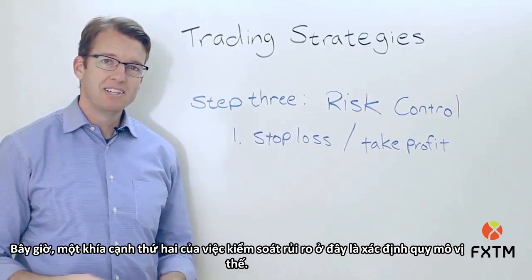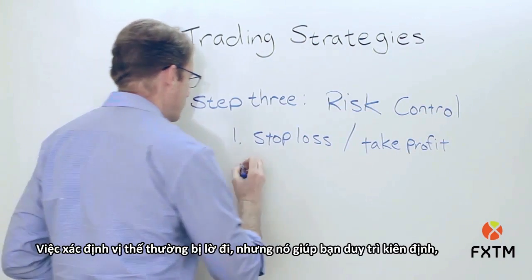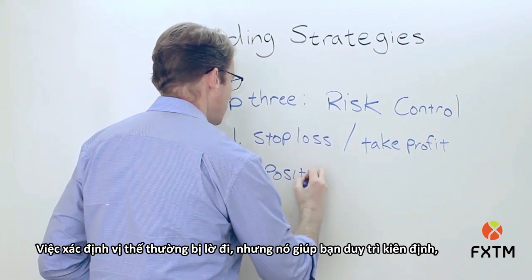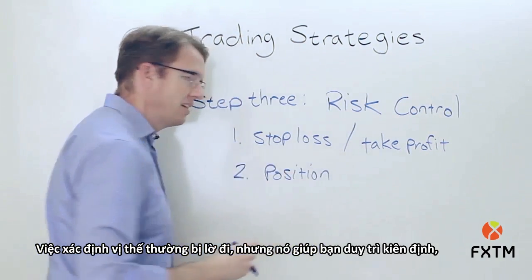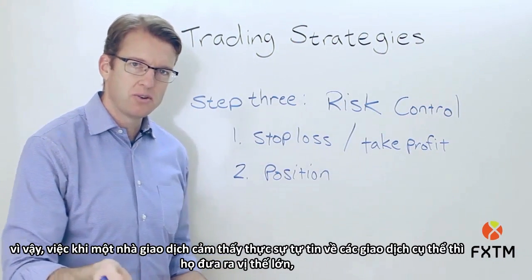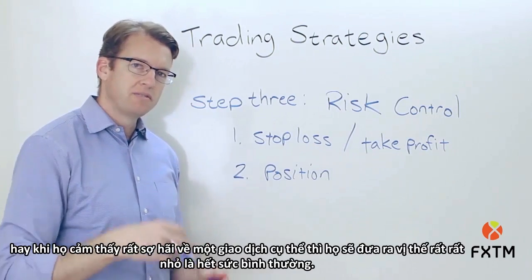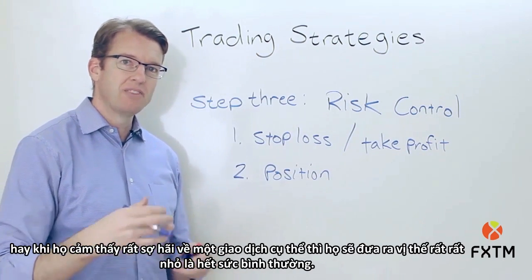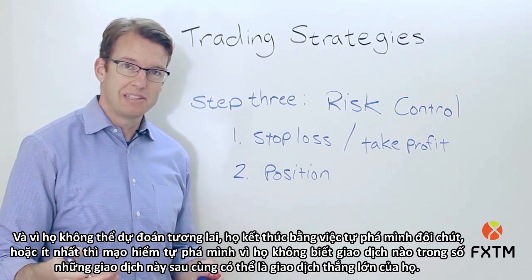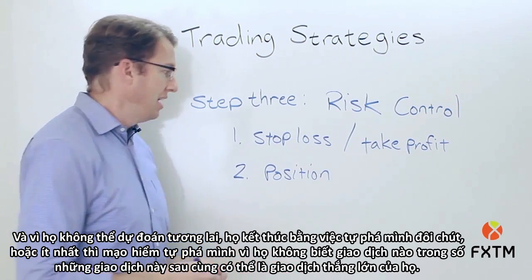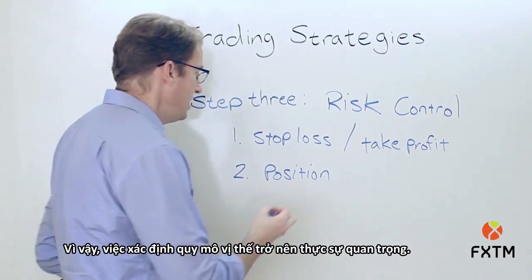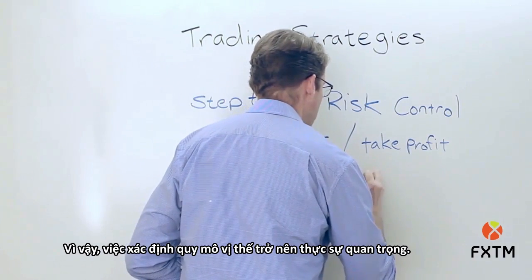The second aspect of risk control is position sizing. Position sizing is oftentimes overlooked, but it helps to stay consistent. It's not uncommon for a trader to feel really confident about a particular trade and get in very heavy, or to feel very scared and get in very light. Since they can't predict the future, they wind up sabotaging themselves, because they don't know which of those two trades ultimately could be their big winner. So position sizing becomes really key.